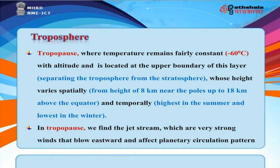The tropopause is where temperature remains fairly constant at around minus 60 degrees centigrade, located at the upper boundary of the troposphere, separating it from the stratosphere. Its height varies spatially from 8 kilometers near the poles up to 18 kilometers above the equator, and temporally — highest in summer and lowest in winter. In the tropopause we find the jet stream — very strong winds that blow eastward and affect planetary circulation patterns.